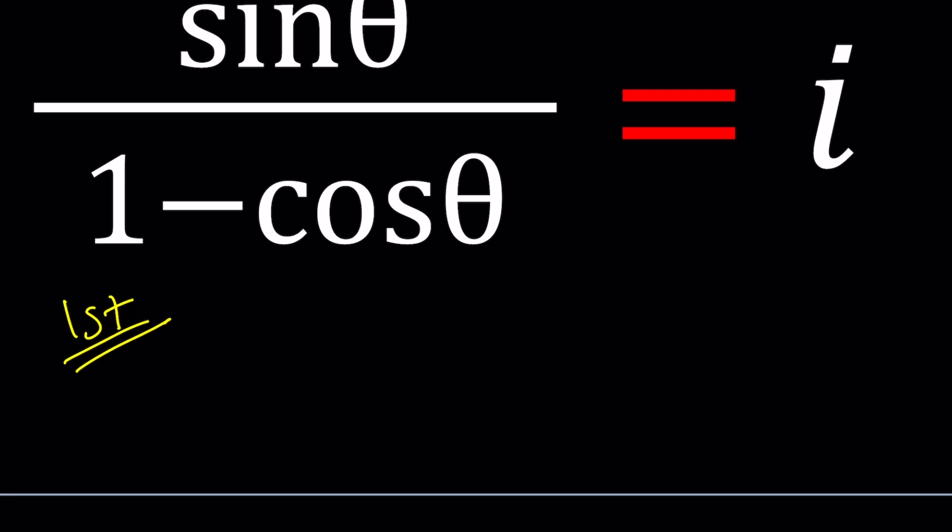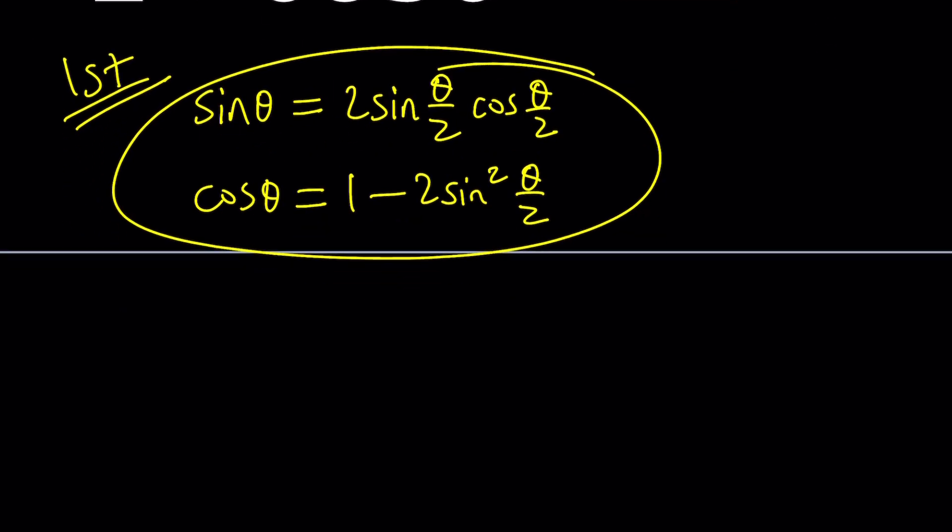For the double angle formula for sine theta, because I need to cut the theta in half, an angle whose double is theta, it's going to be 2 sin(θ/2) cos(θ/2). And for the cosine, there are three alternatives, but because it's being subtracted from 1, I want to use a formula that has positive 1 in it, which is 1 - 2sin²(θ/2). If you're studying trigonometry, pre-calculus, or calculus, you definitely need to know your trigonometry identities. Let's go ahead and plug these into our equation and see what happens. Something very interesting is going to happen, trust me.